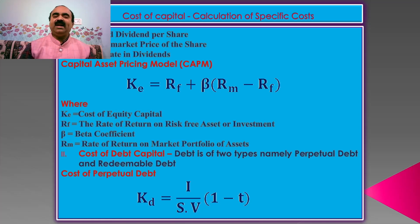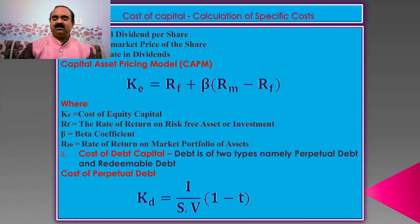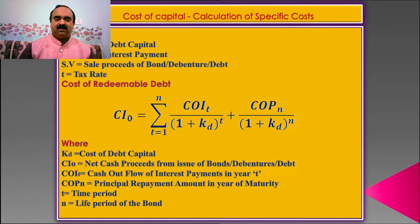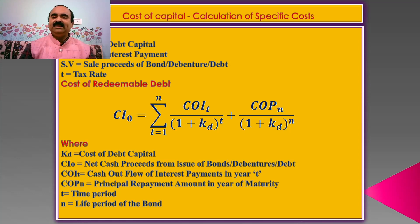2. Cost of debt capital. Debt is of two types, namely perpetual debt and redeemable debt. Cost of perpetual debt: KD = (I / SV) × (1 − T), where KD is cost of debt capital, I is annual interest payment, SV is sale proceeds of bond or debenture or debt, and T is the tax rate.